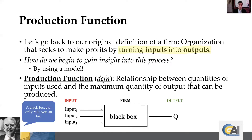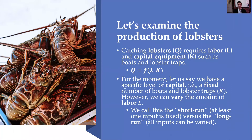Ronald Coase noted the black box can only take you so far — to get a richer understanding of firm conduct, we need to look inside the box. For our example, let's say catching lobsters is Q, the output, and it requires two inputs: labor and capital. The capital could be boats and lobster traps. So quantity is a function of labor and capital — those two inputs go into some production process to give you that output.